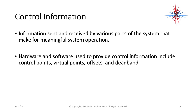Let's look at the definition of control information first. It's information sent and received by various parts of the system that make for meaningful system operation. Hardware and software used to provide control information includes control points, virtual points, offset, and deadband. Overall, control information is the total communications between the various parts of the system.